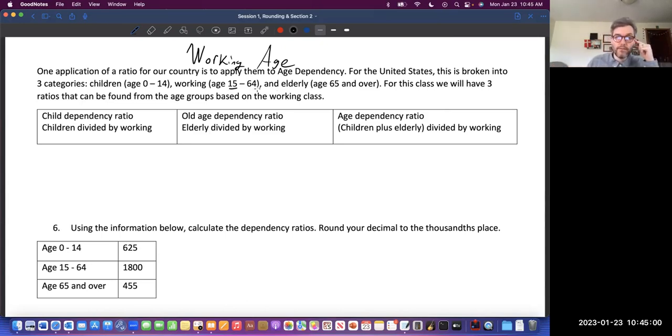Though in reality, that number, at least for this country, has kind of shifted. People start working a little bit later, but then they don't quite retire at 64. But in this class, we consider 15 to 64 the working age.